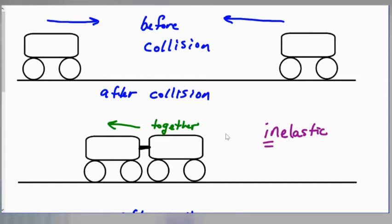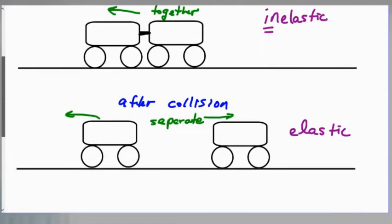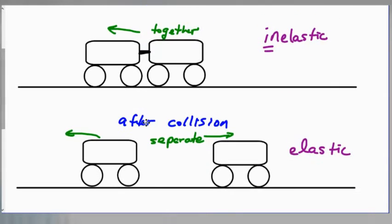What we're looking at with this video is what we would call elastic. The difference here is that after the collision, the cars are separate — they go on their own way. They might both move north, they might both move south, or they might move in opposite directions. But what we need to figure out is that the momentum is conserved, so the amount of momentum we had prior to the collision will exist again after the collision.